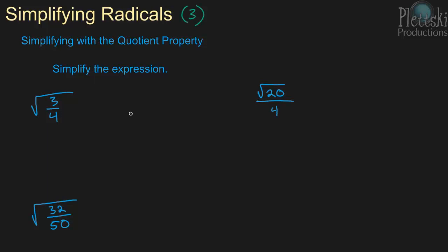Simplifying with the quotient property. We're going to simplify three quotients here, three radicals, using the quotient property. The first one is the square root of 3 divided by 4. Remember that the quotient property is: if you have the square root of a over b, that is equal to the square root of a over the square root of b.